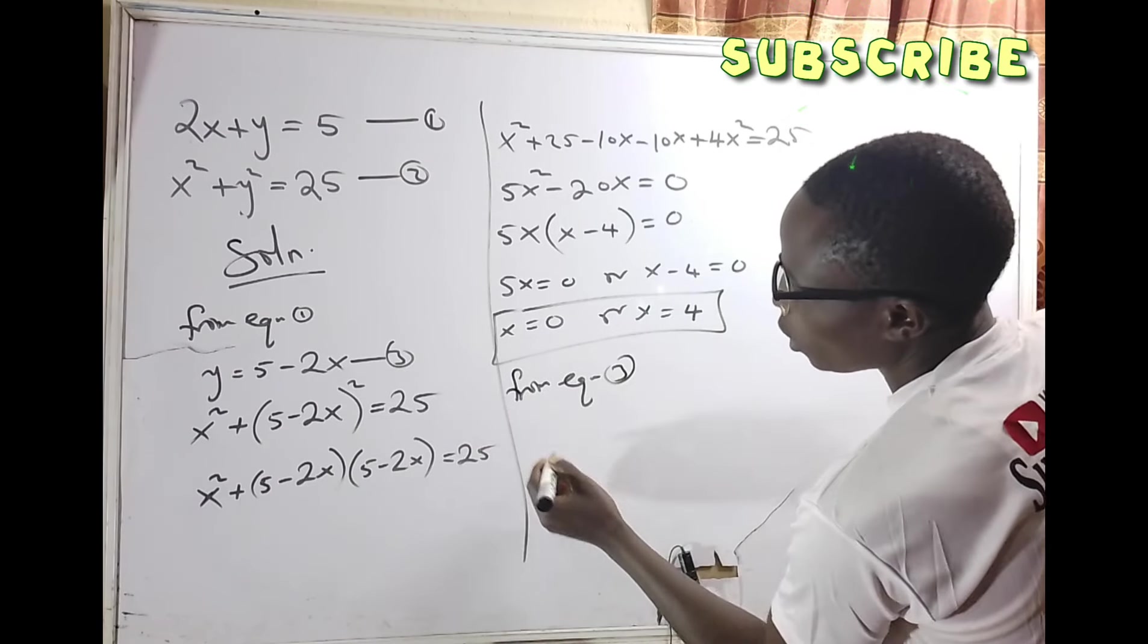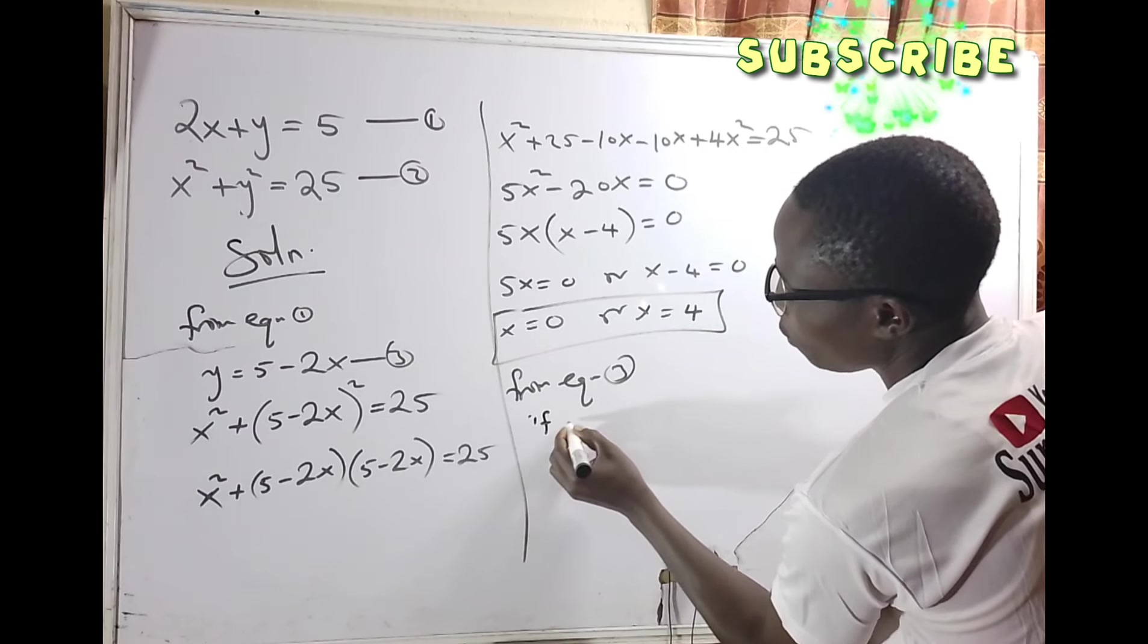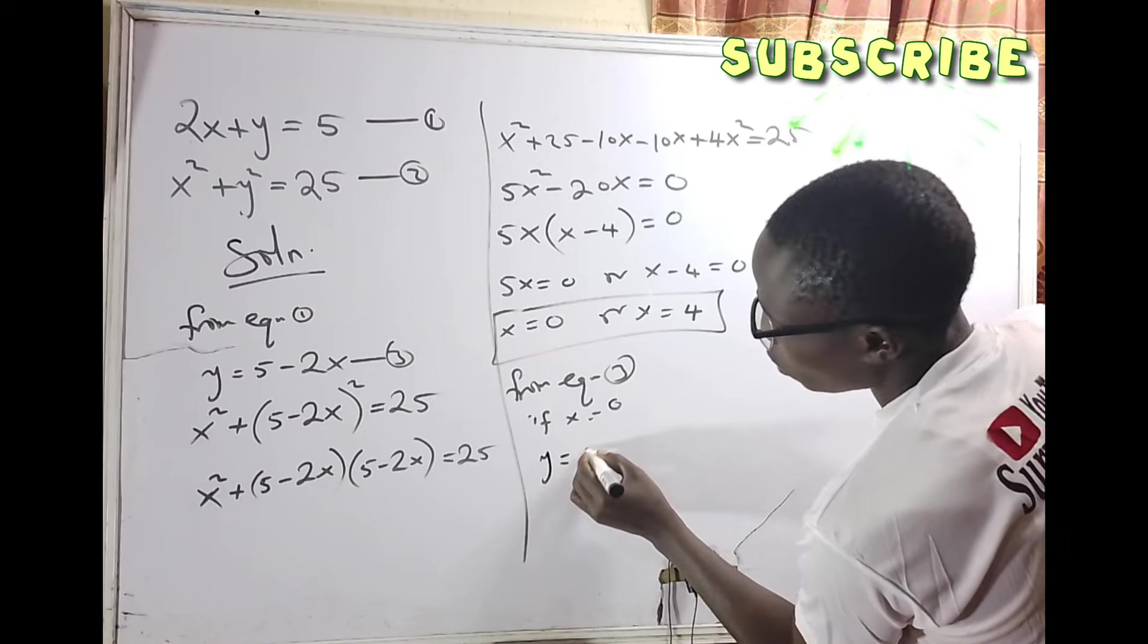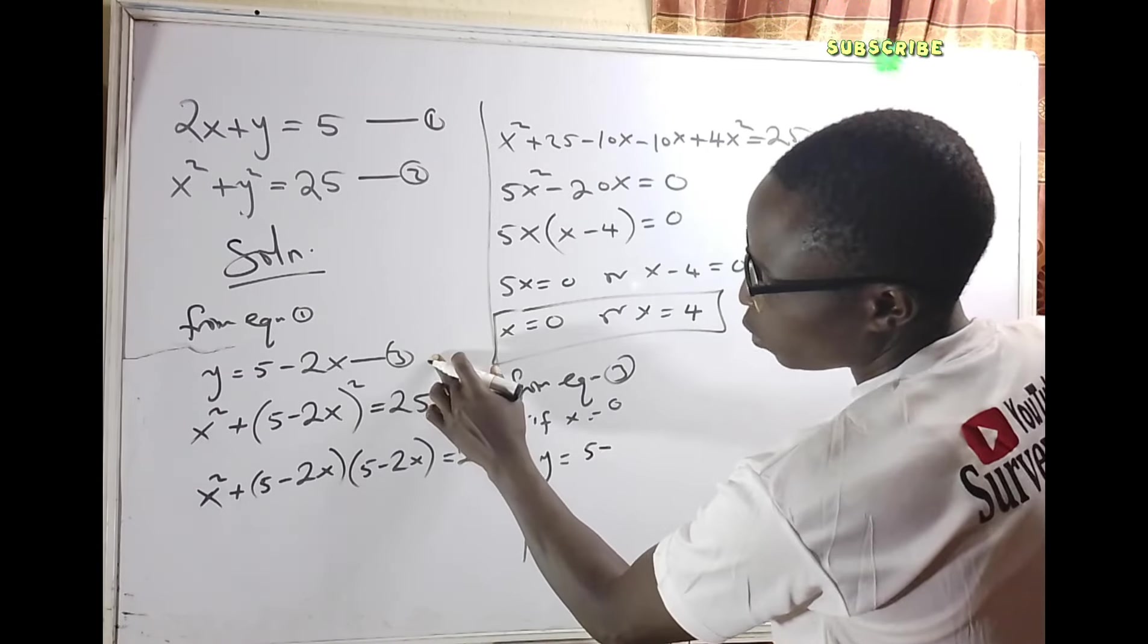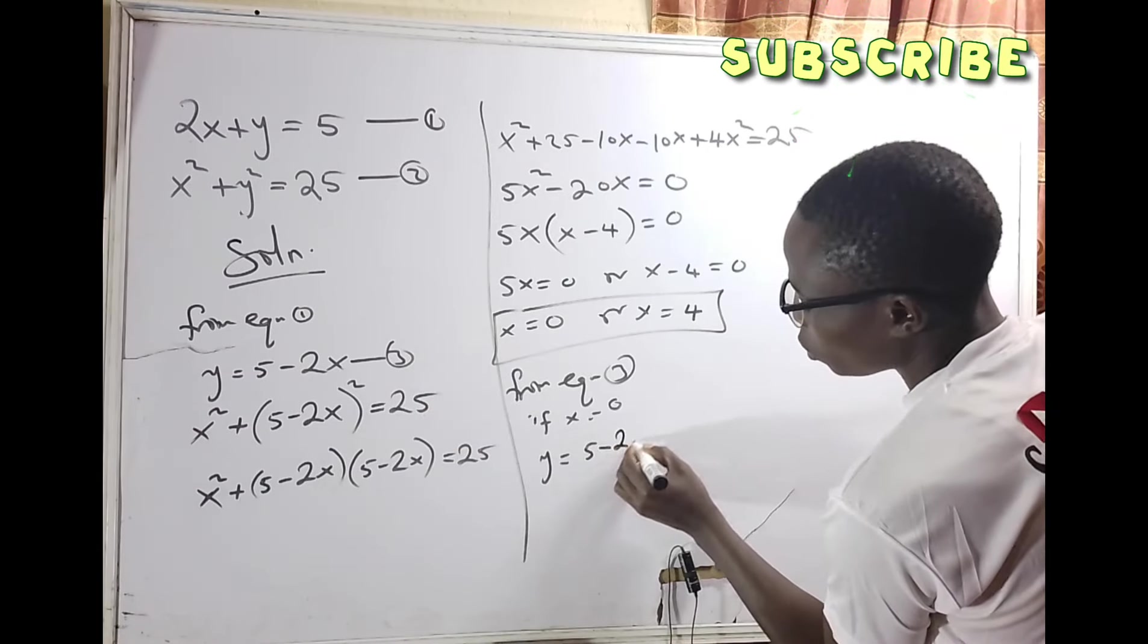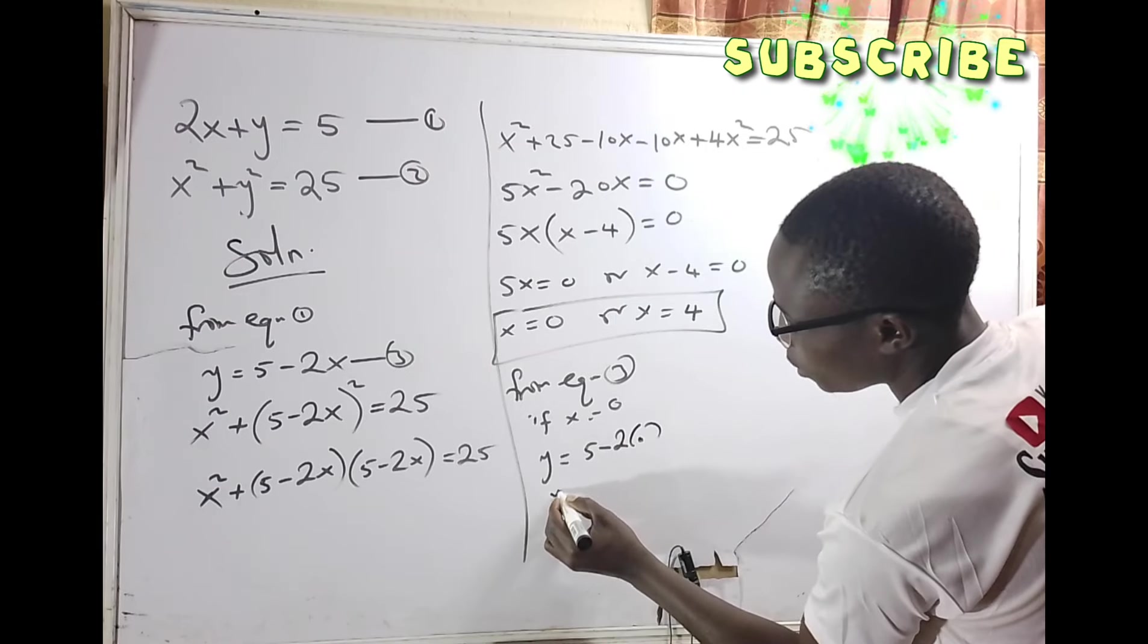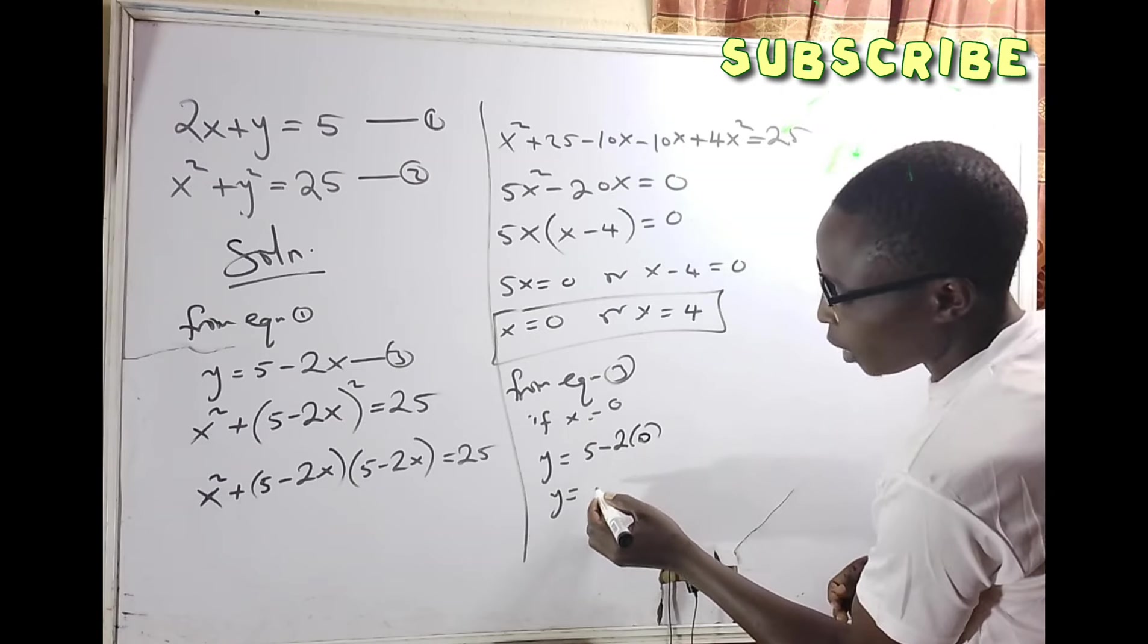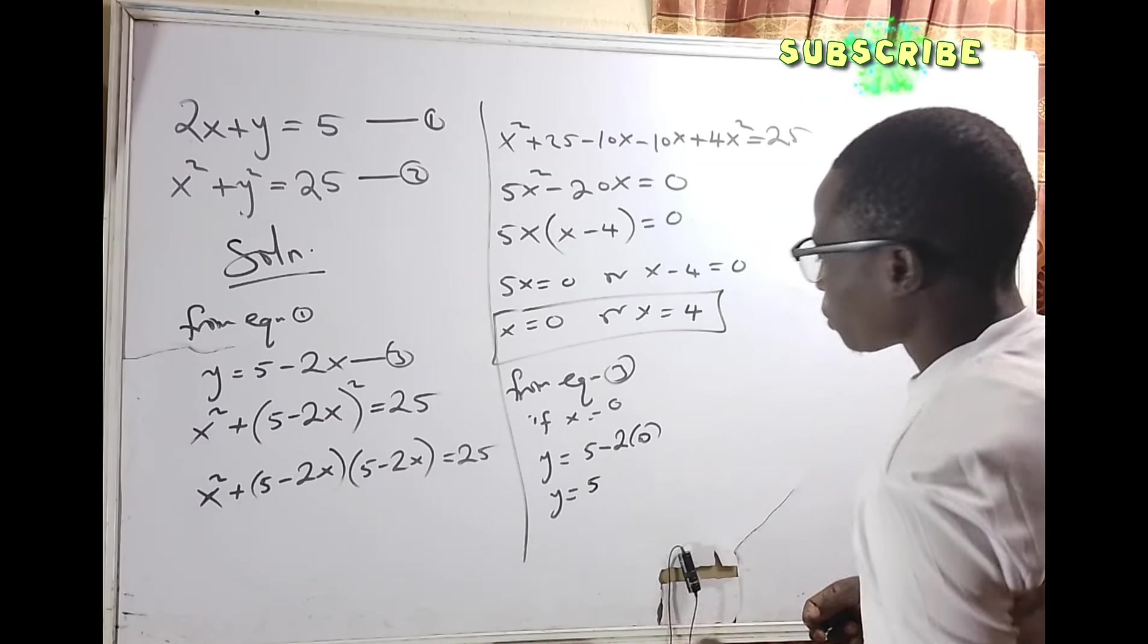From equation 3, if x equals zero, then y equals 5 minus 2 times zero. That means y equals 5.